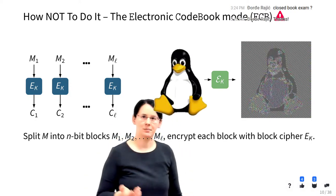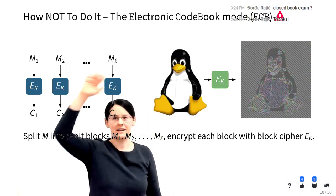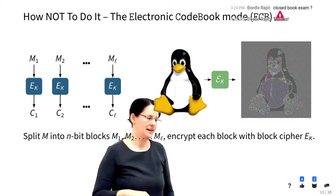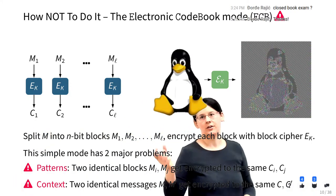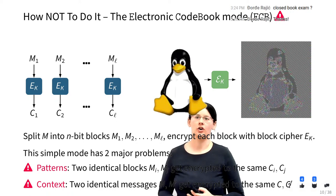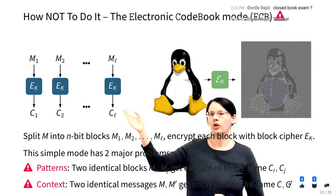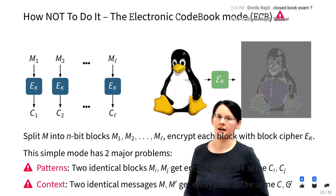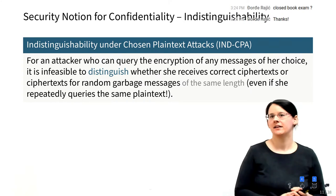There's a second problem: not only do patterns within the plaintext repeat, but encrypting the exact same message twice always produces the exact same full ciphertext. This is a context problem — this encryption scheme doesn't depend on any context such as when the message was sent or its role. That's a massive problem, and to formally define why, we need to look at the security notion.